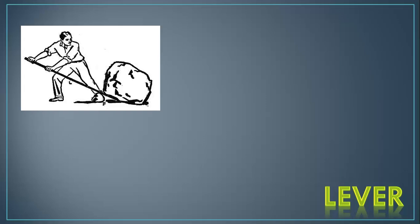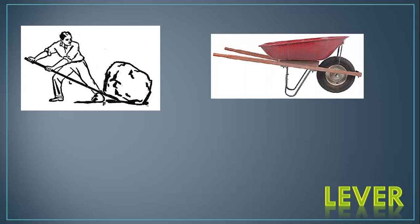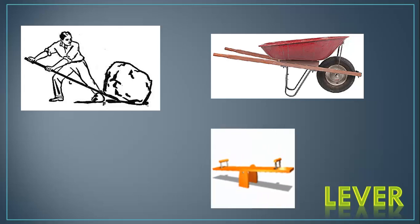The lever is our next simple machine. You can see the lever here used as a piece of wood to try to move this rock. A lever could also be considered a wheelbarrow and also a seesaw. To make a lever work, all of these objects have a central pivot point called the fulcrum. And I've highlighted it in each picture. In the first picture, the smaller rock is the pivot point on which the lever turns.